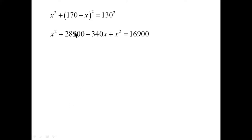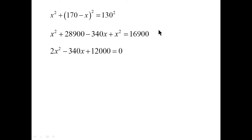Bringing this forward and squaring the binomial now: 170 squared — perhaps on a calculator. The double product term will be 340x with a negative sign, and then plus x squared. Collecting like terms and simplifying, and equaling it to zero — because now we're solving a quadratic equation, and that involves equating to zero — we have 2x squared minus 340x, and when we take 16,900 and subtract it, we get 12,000. And all of this is equal to zero.